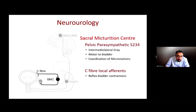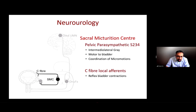The next important neurological component is the sacral micturition center. This is the parasympathetic input from nerve roots S2, S3, and S4, connecting with the intermediolateral gray and providing motor control to the bladder, coordinating the micro-motions. The bladder also has C fibers which give reflex bladder contractions in response to pain.